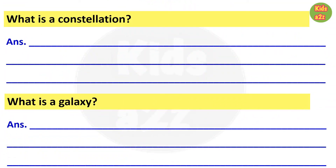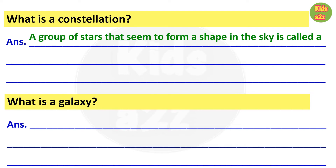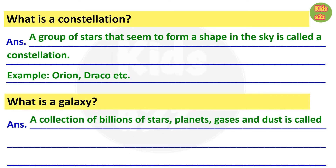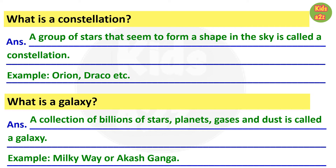Next question: what is a constellation? Answer: a group of stars that seem to form a shape in the sky is called a constellation. Some examples are Orion and Draco. Next question: what is a galaxy? A collection of billions of stars, planets, gases and dust is called a galaxy. An example is the Milky Way, also known as Akash Ganga.